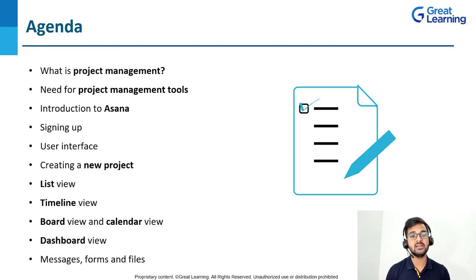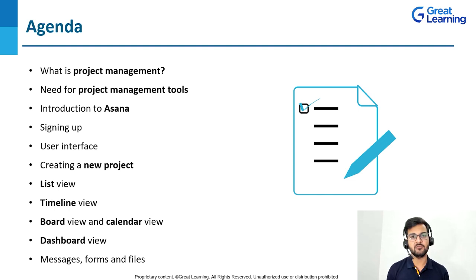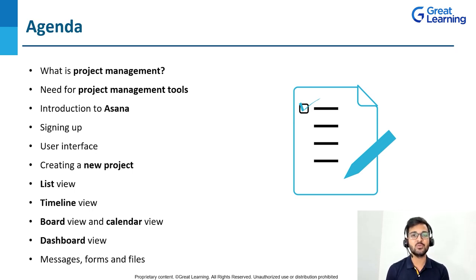Then we'll cover the user interface — what are the different things on the website and how to go about it. Then creating a new project, followed by list view, timeline view, board view, calendar view, dashboard view, and messages, forms and files. There are different views in this project management tool called Asana and we will be discussing each of those. Let's move forward and try to cover each of these topics one by one.